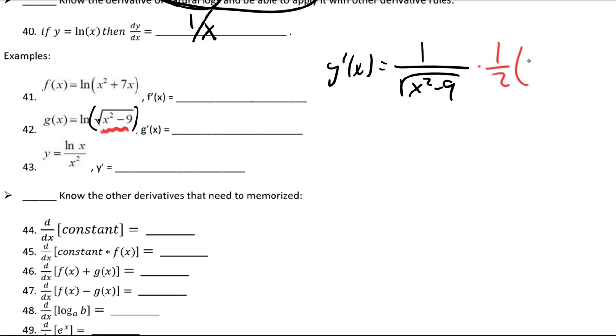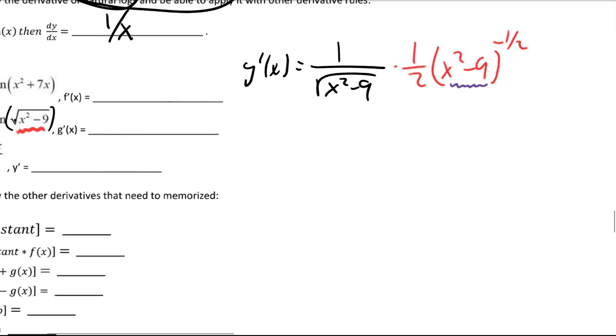So bring the power down, lower the power by 1. And then, do you see how, like I took the square root of something, but do you see how that the something has an inside too? So you had to use the chain rule a second time.